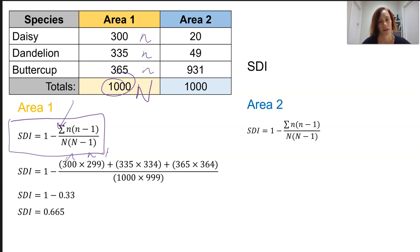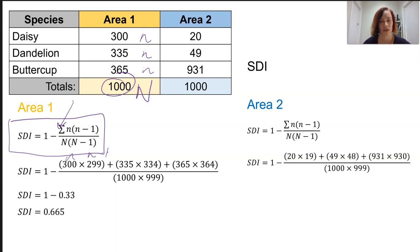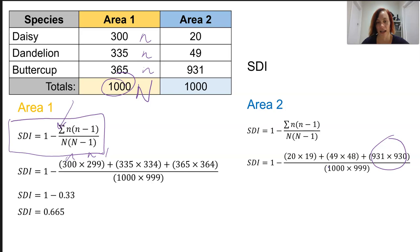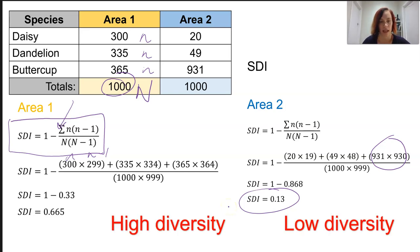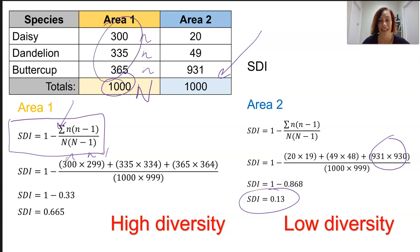If we do the exact same thing — same formula, same strategy — with area two, substituting our numbers in: 20 times 19 plus 49 times 48. Suddenly we can see that the dominating species is going to have quite a heavy influence on this formula. We end up with a much larger number before we subtract it from 1, and we will end up with a much smaller SDI value. So we've got really high diversity in area one versus low diversity in area two, because that dominating species removes diversity as opposed to a relatively even spread of abundance across the three species.